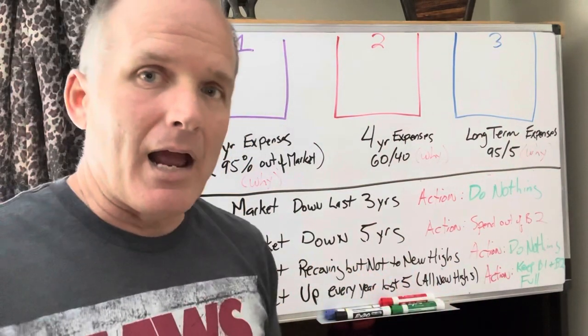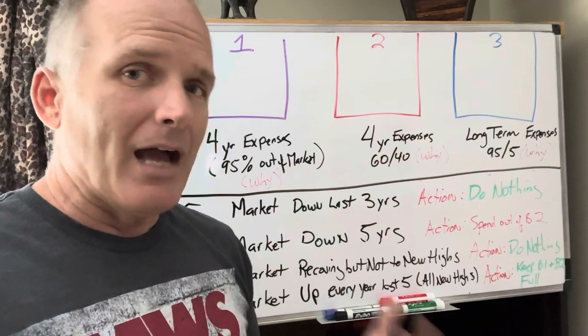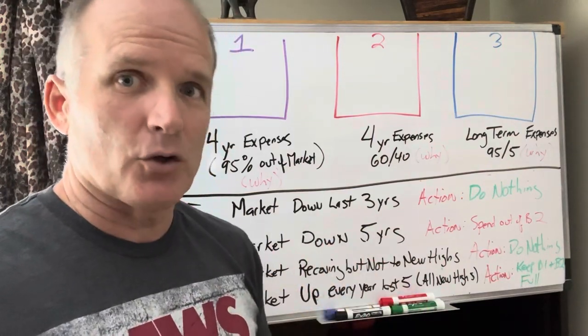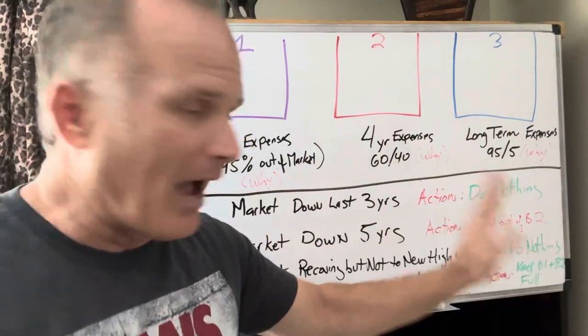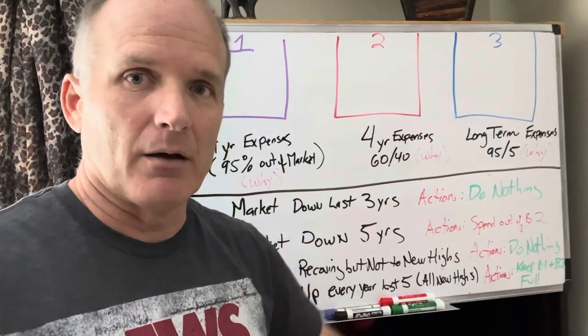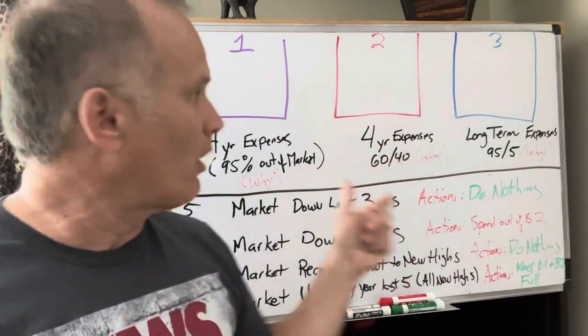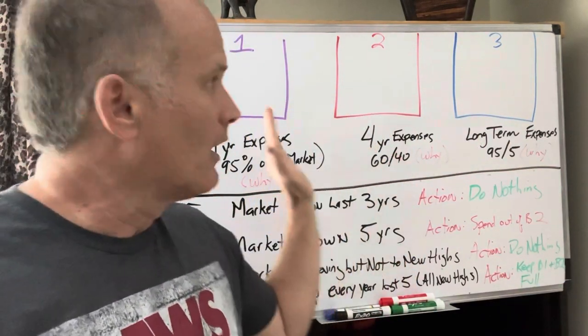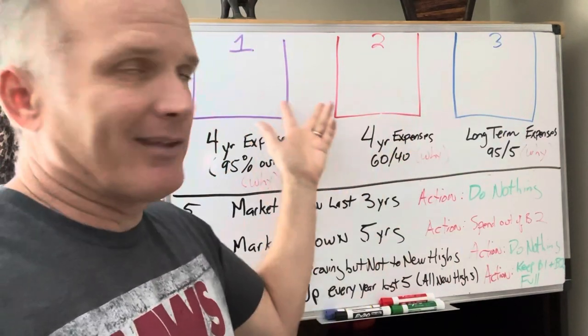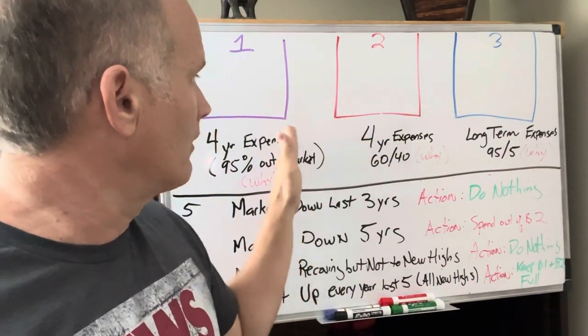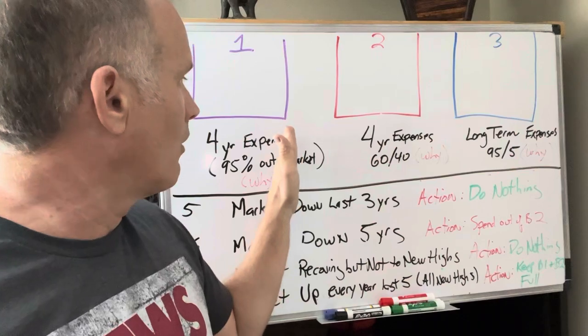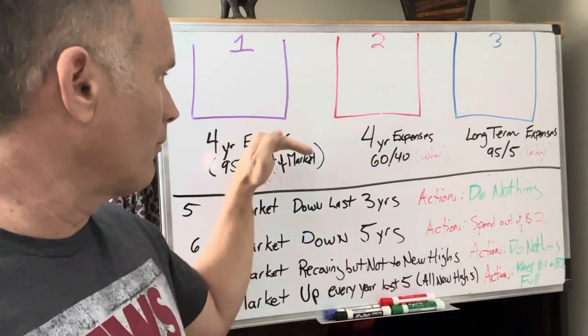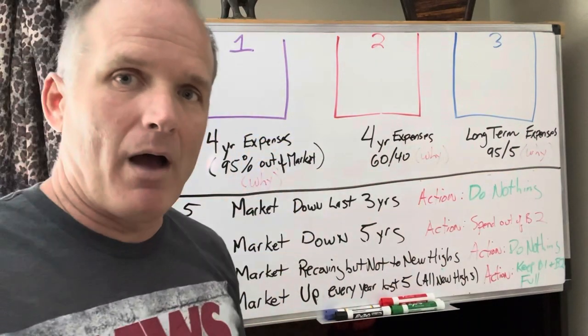So really every quarter I do a deep dive in this. The vast majority of the quarters, you're going to do nothing. A vast majority of them do nothing. If the market's up, top off one and two if needed. Look at each bucket. Main things you're looking at is bucket one and two and ask: am I prepared for a bear market? Yes or no. Am I in a bear market? In a bear market, let these ride down. They all have a purpose.